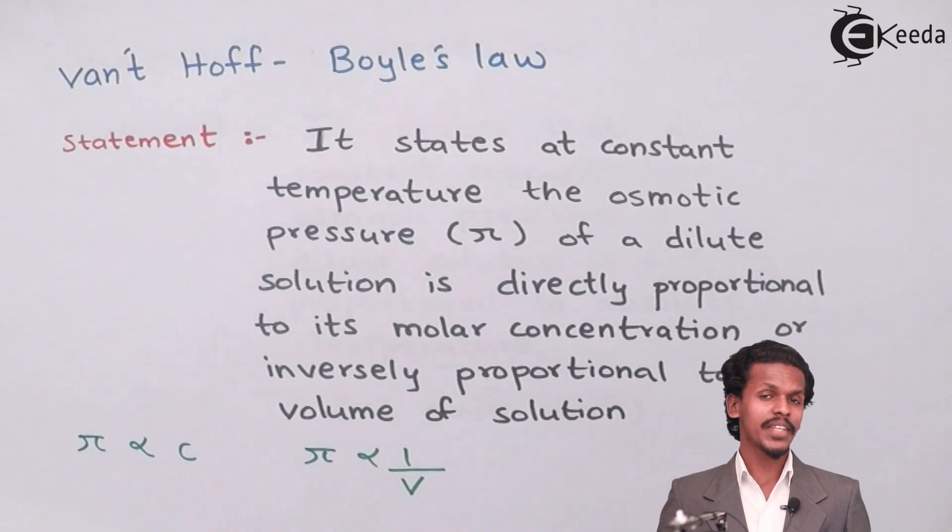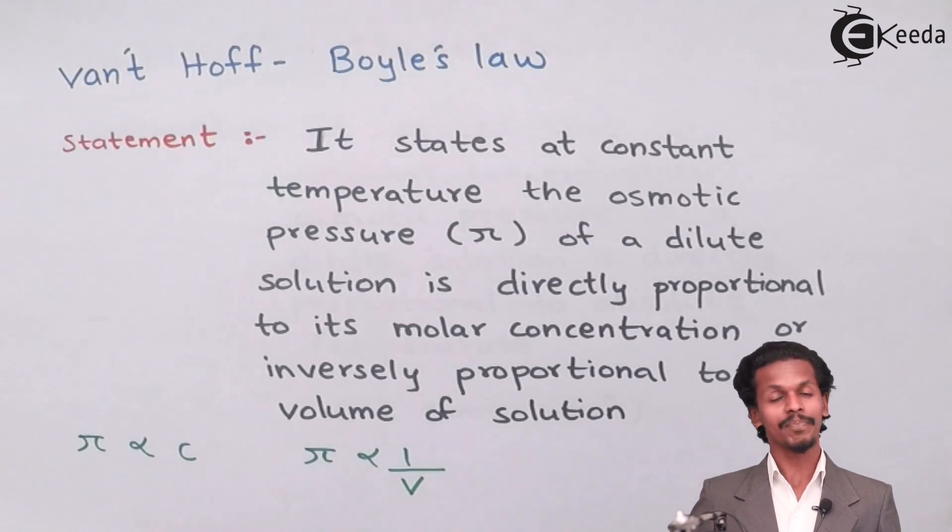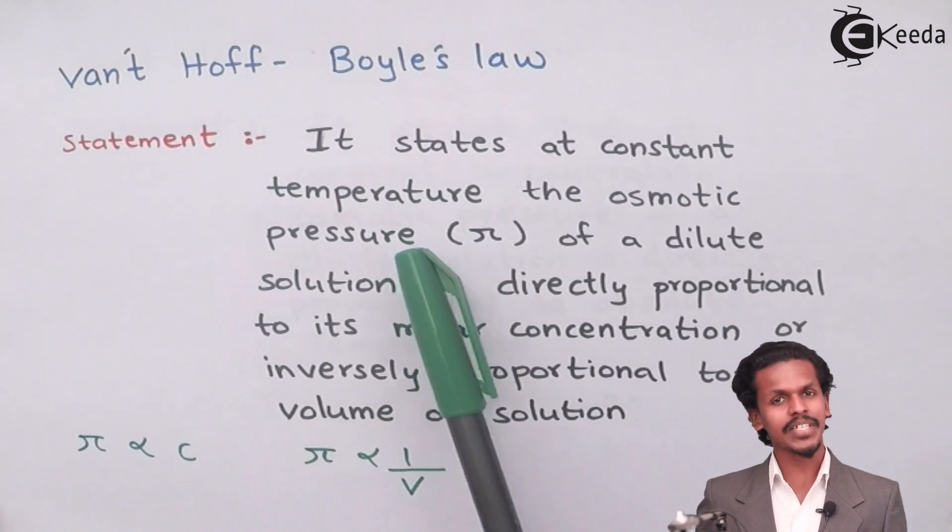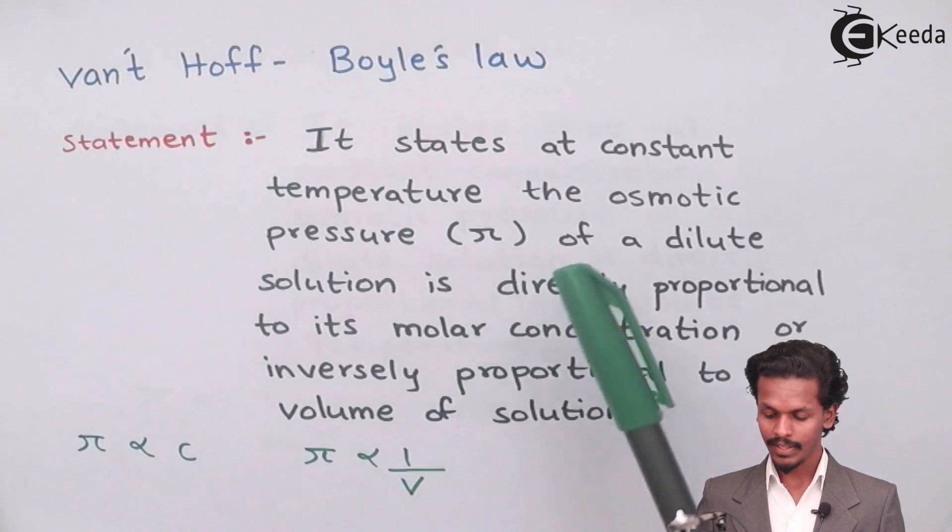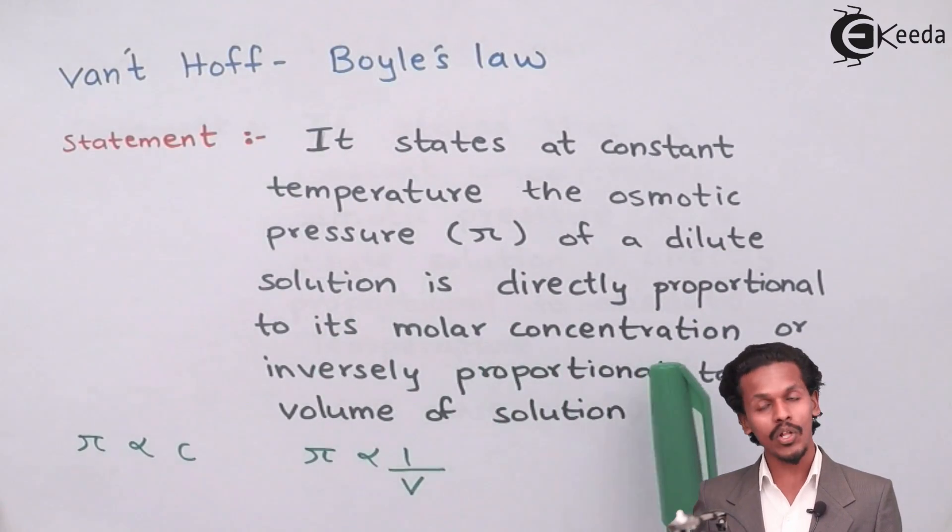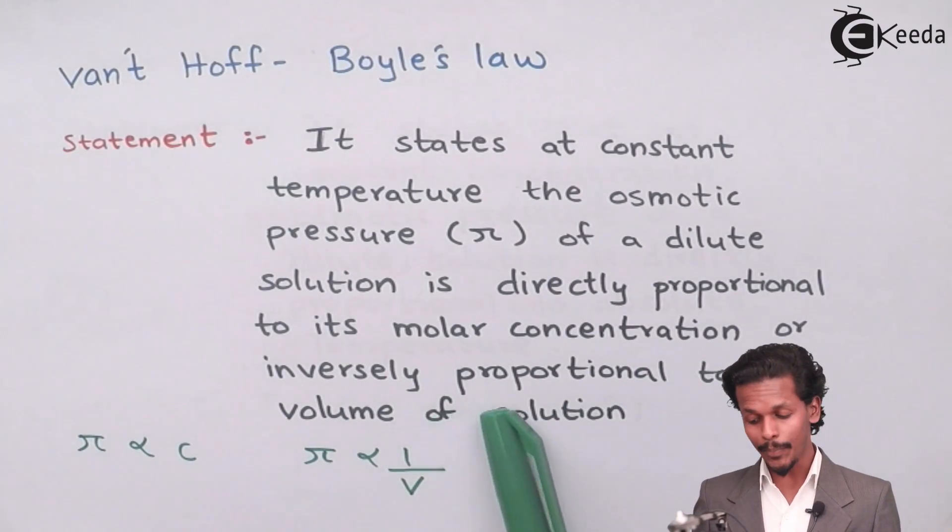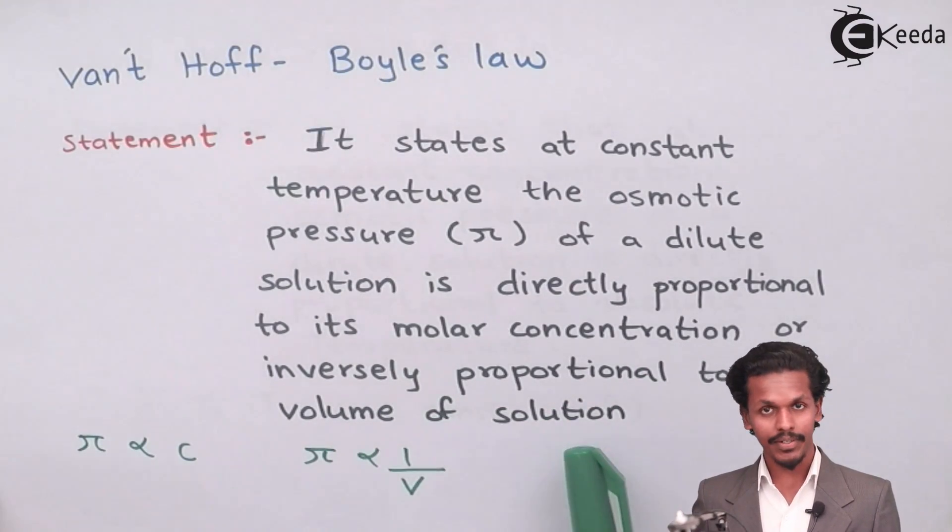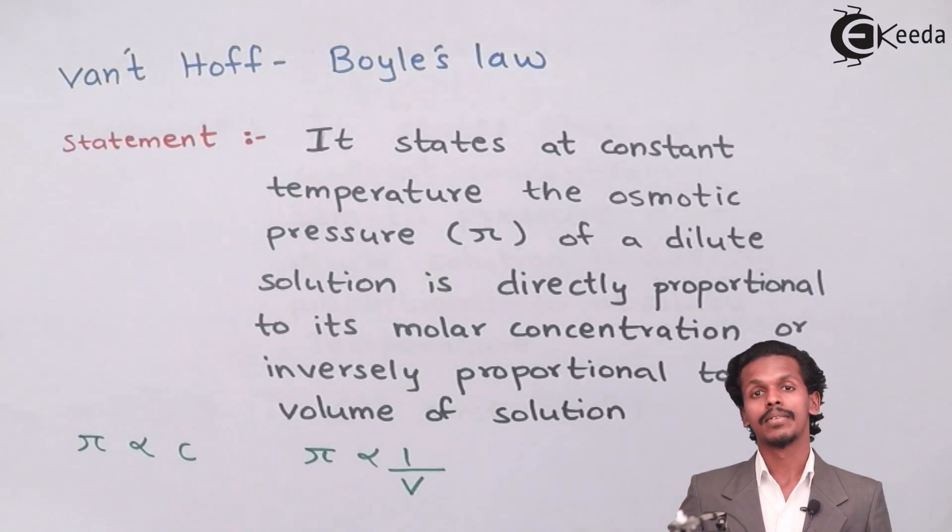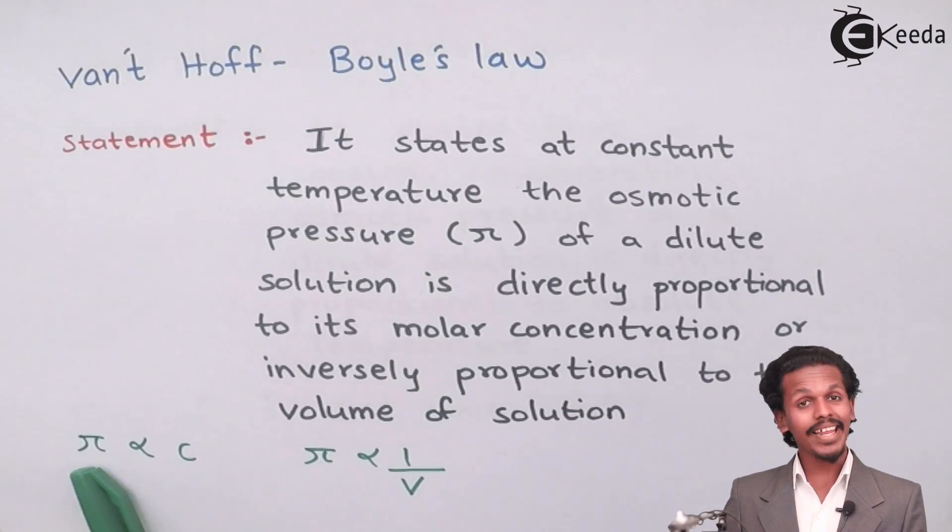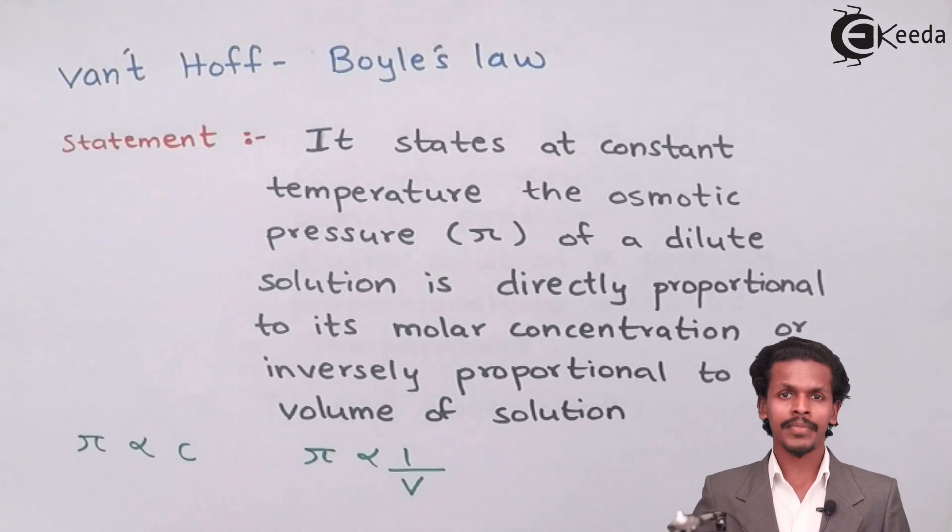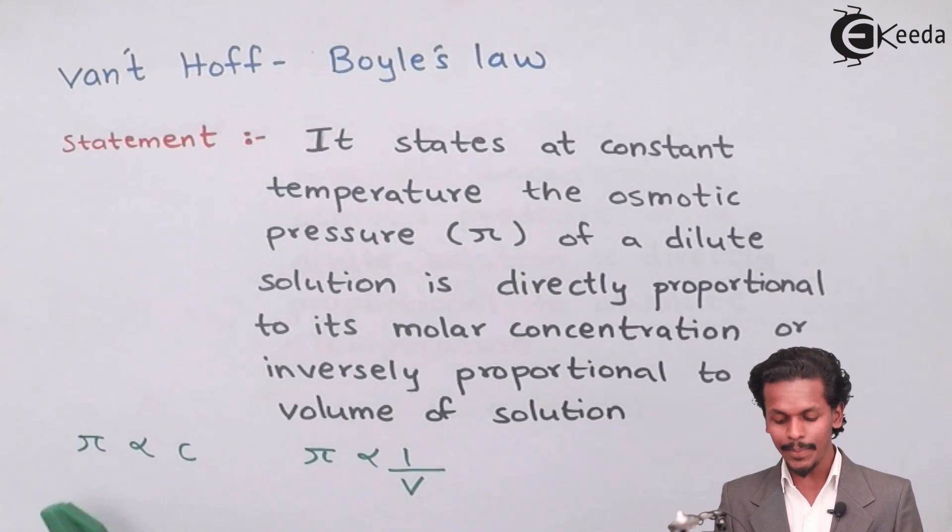So talking about the first one, that is van't Hoff-Boyle's law, it states that at constant temperature, the osmotic pressure which is denoted by π of a dilute solution is directly proportional to molar concentration. So based on that, we can see a very simple equation as π is directly proportional to C.